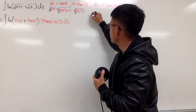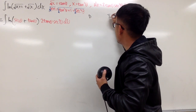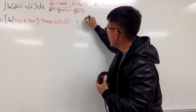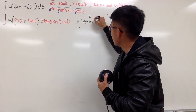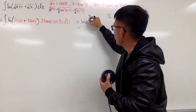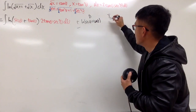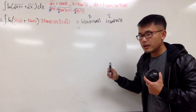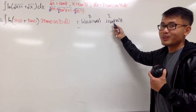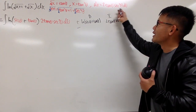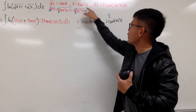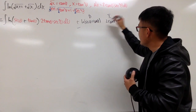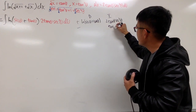Let me set up the DI table. We differentiate ln of secant theta plus tangent theta, and integrate 2 tangent theta secant squared theta. The integral of tangent theta secant squared theta — you can let u equal tangent theta, or just recognize it directly — gives tangent squared theta over 2, but we already have the factor of 2, so the integral is tangent squared theta.